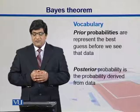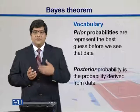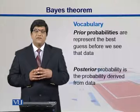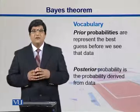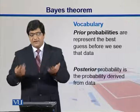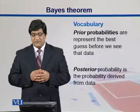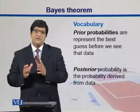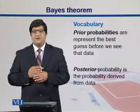Prior probabilities represent the best guess before we see the data. For example, if you're interested in finding the number of fruits in a farm, you might know the previous record of that farm. Before getting the fruits, you can guess how many you will get — that is called prior probability or priori. Posterior probabilities are the probabilities derived from the data. Once you see the data and draw frequencies from it, those are called posterior probabilities.